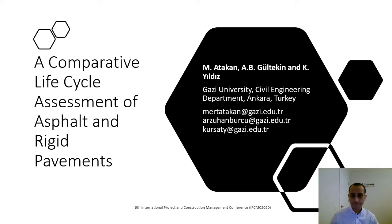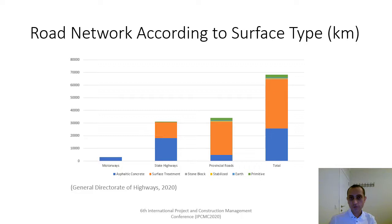According to the Turkish Directorate of Highways, Turkish highways are composed of 38% asphalt concrete and 57% chip seal, and 5% of other surface types. As shown in the chart, most of the road surfaces are asphalt concrete and chip seal, and there is no rigid pavement in Turkey except for several kilometers of test sections.